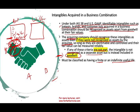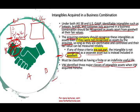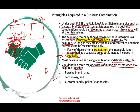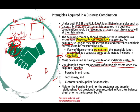Let me show you an example of what I meant about buying a company. Volkswagen identified three major classes of intangible asset when they bought Porsche: the Porsche brand name, technology, and customer-supplier relationships.